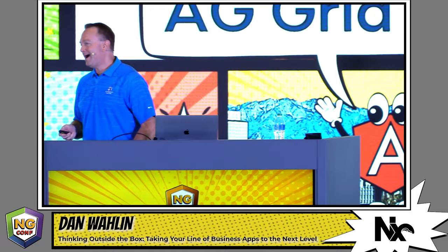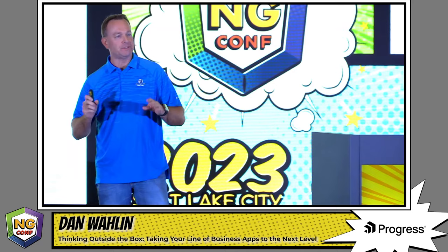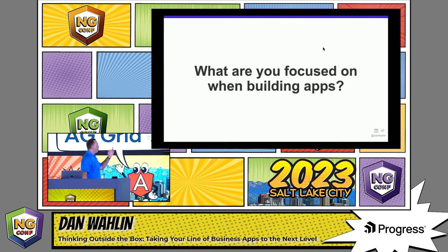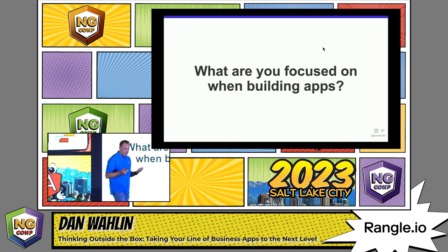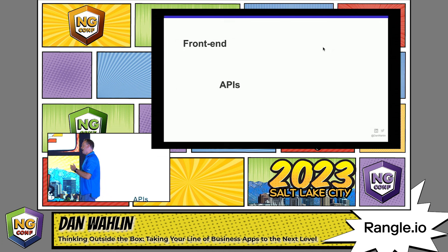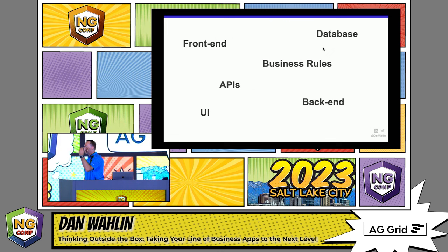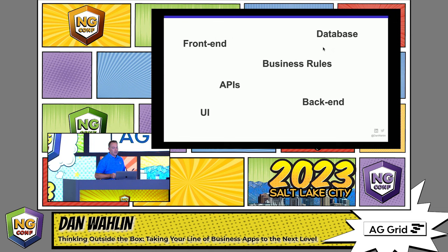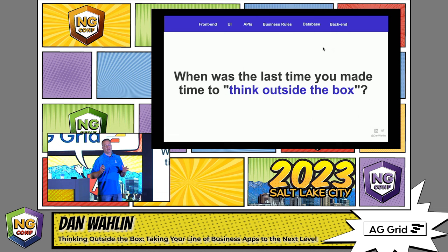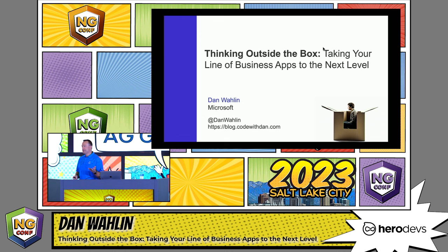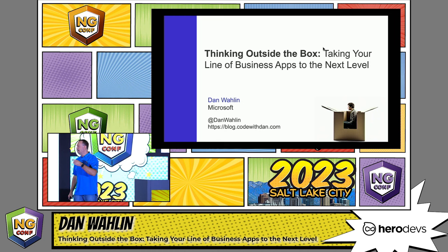What we're going to talk about in this particular session is how to take your apps up to that next level. I want to start off with a question: what are you typically focused on when you're building apps? Things like the front end, the back end, a database, CI/CD, cloud services, deployments — the list goes on. But when's the last time you actually took the time to say, hey, what is the end user doing with my app, and how could we take it up a notch? That's what I'm going to talk about: thinking outside the box, taking your line of business apps to the next level.